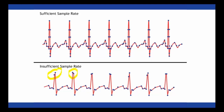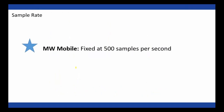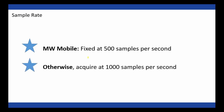Because of undersampling, we're not getting an accurate representation of when a beat occurred in terms of milliseconds, and we need millisecond accuracy for heart rate variability or cardiac impedance analysis. To be safe, you should always acquire data at 500 samples per second, but 1,000 is better. For higher frequency signals like EMG or EEG, even higher sample rates are preferred. The Mindware Mobile is fixed at 500 samples per second, which is sufficient for all data collected with it. When in doubt, acquire at 1,000 samples per second.